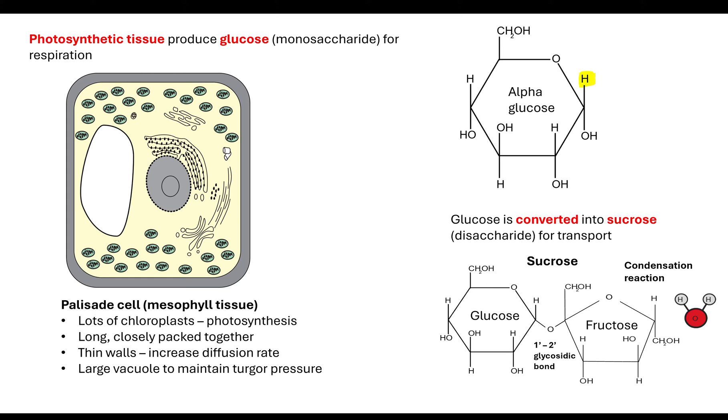You don't need to know that it's a one-two glycosidic bond, but they may ask you to identify the type of glycosidic bond present in a diagram. It's an alpha glucose because at carbon one the hydrogen is above. With fructose, we've got a beta fructose molecule, and we're using the second carbon to form that glycosidic bond.